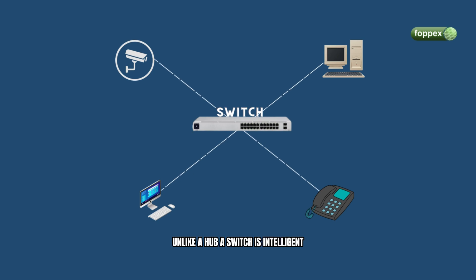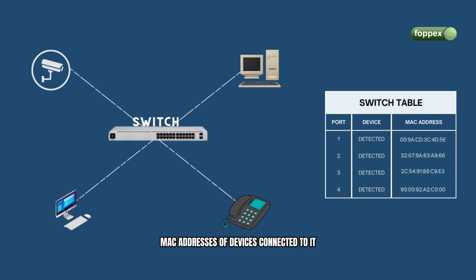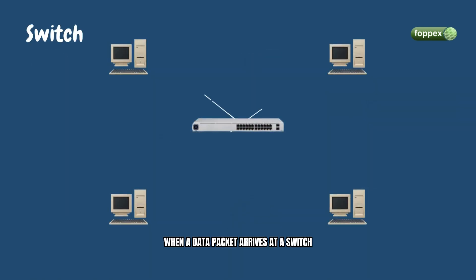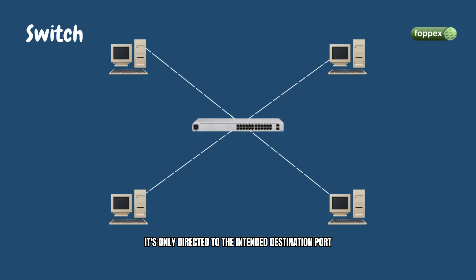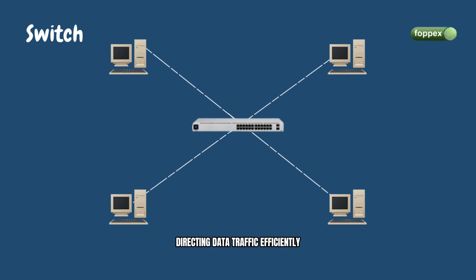However, unlike a hub, a switch is intelligent. It can learn and store the physical addresses, MAC addresses, of devices connected to it. When a data packet arrives at a switch, it's only directed to the intended destination port based on the MAC address, reducing unnecessary traffic on the network. Think of the switch as the traffic controller of your network, directing data traffic efficiently within the confines of a single network.